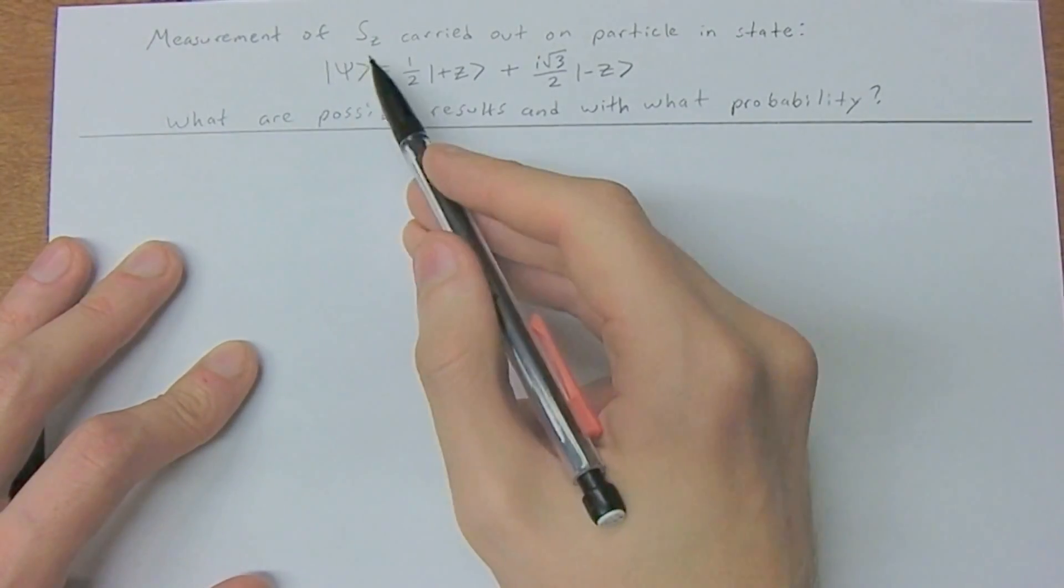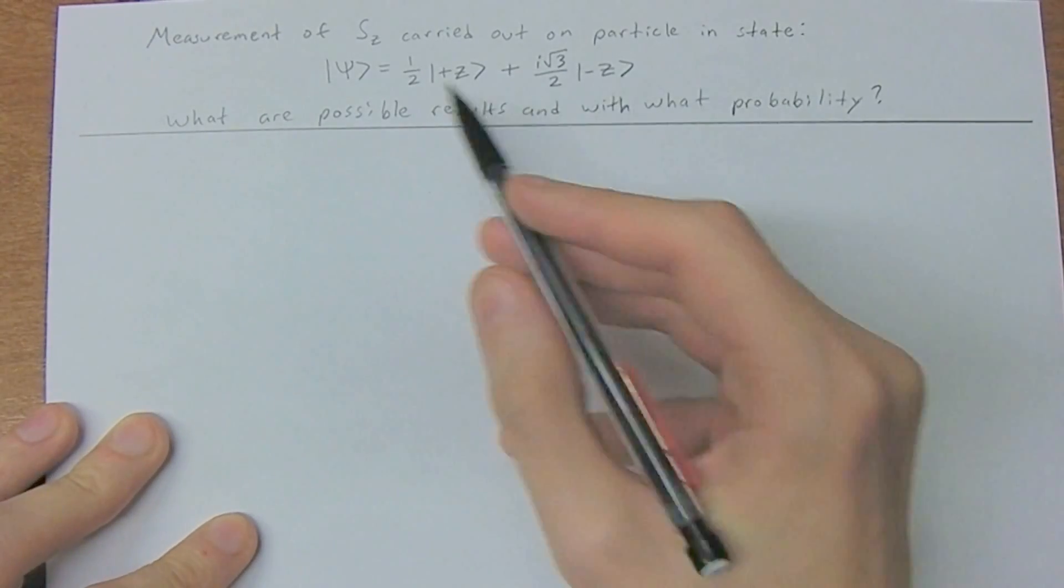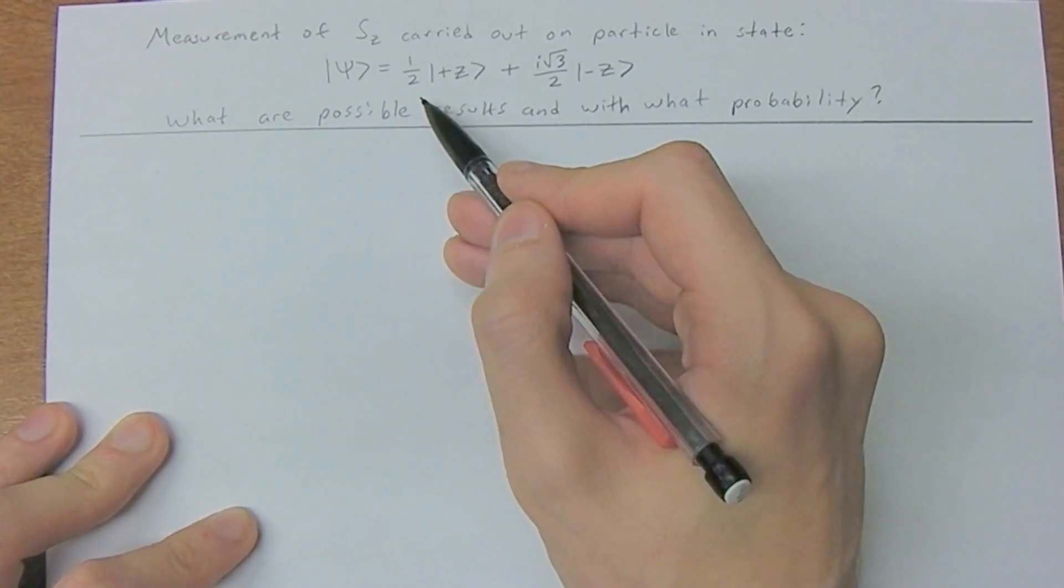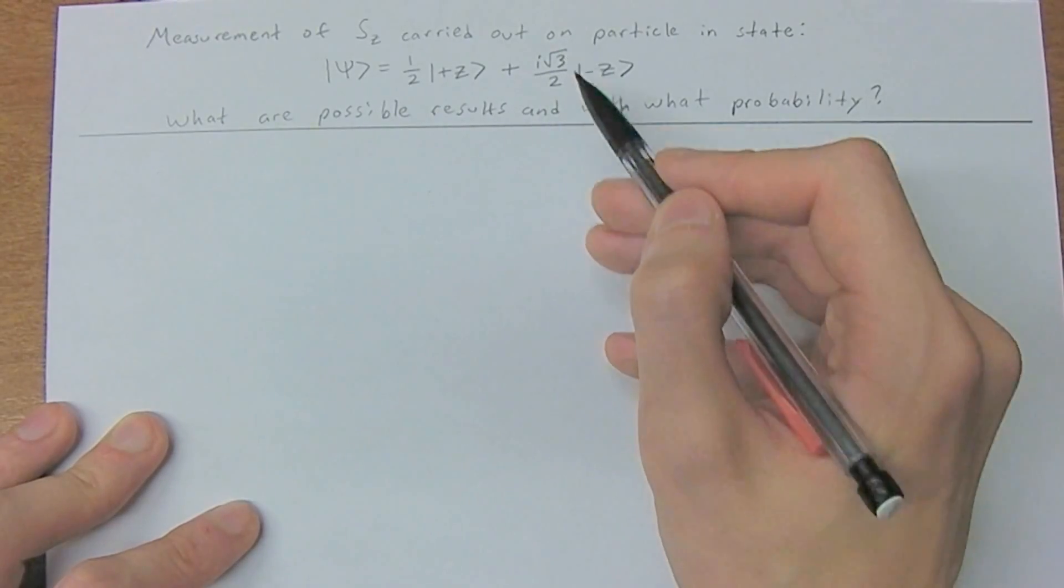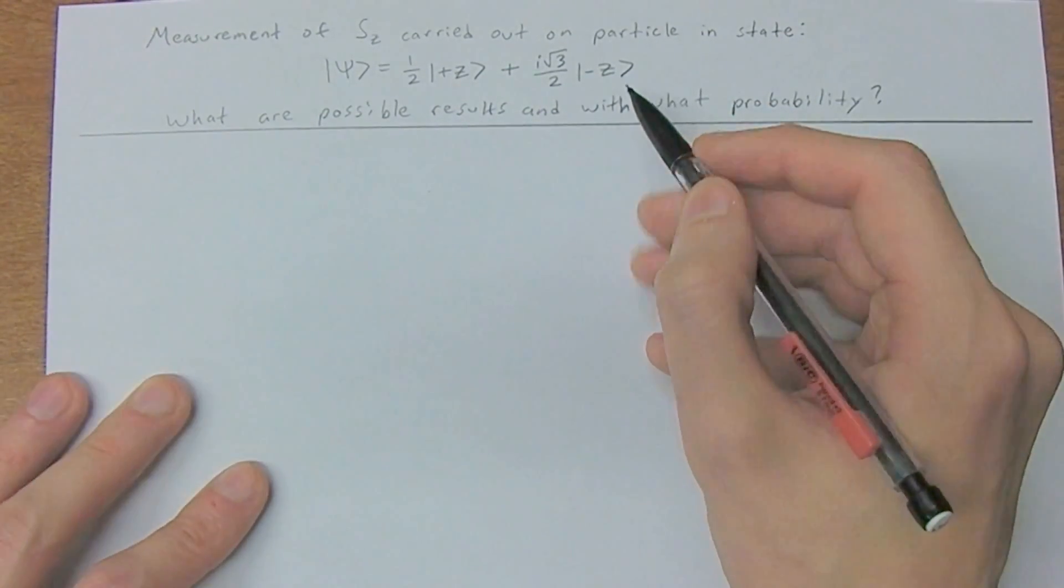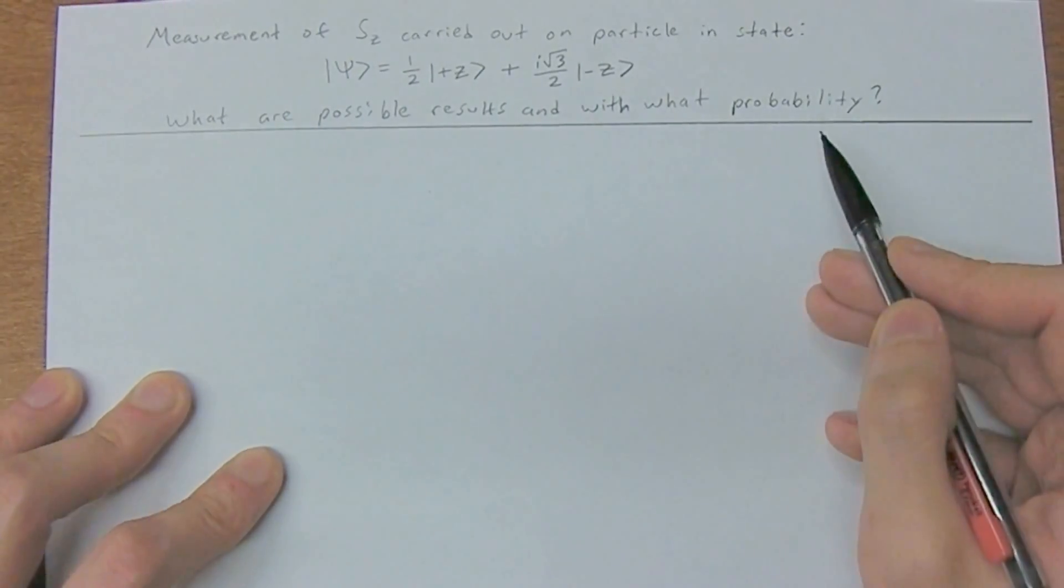We have a measurement of SZ carried out on a particle in state ket psi equals one half ket plus z plus i square root of three divided by two ket negative z. Now we want to find what are the possible results and with what probability.